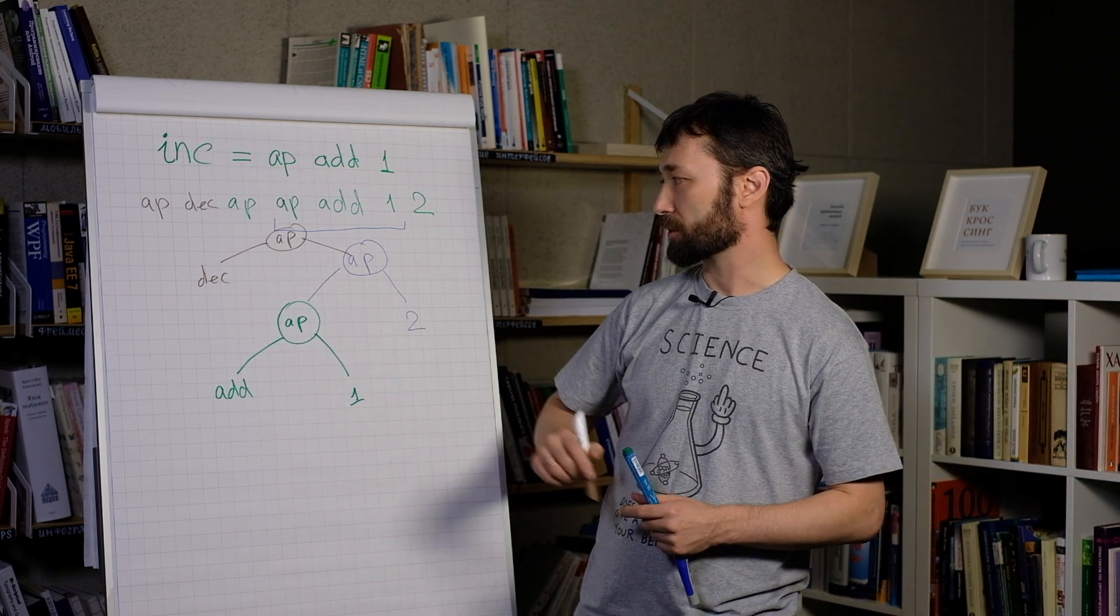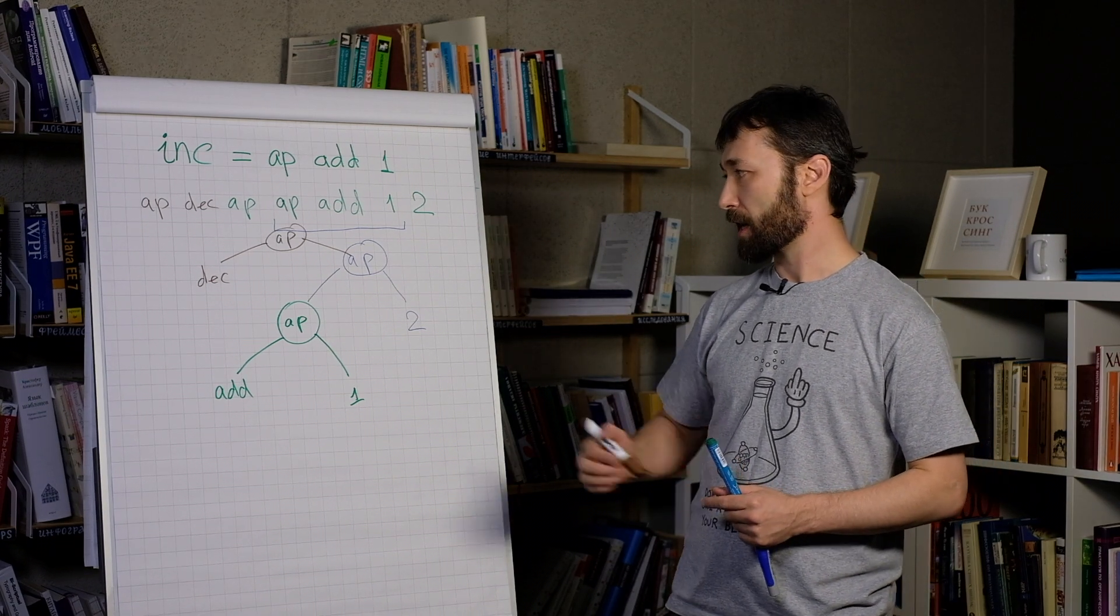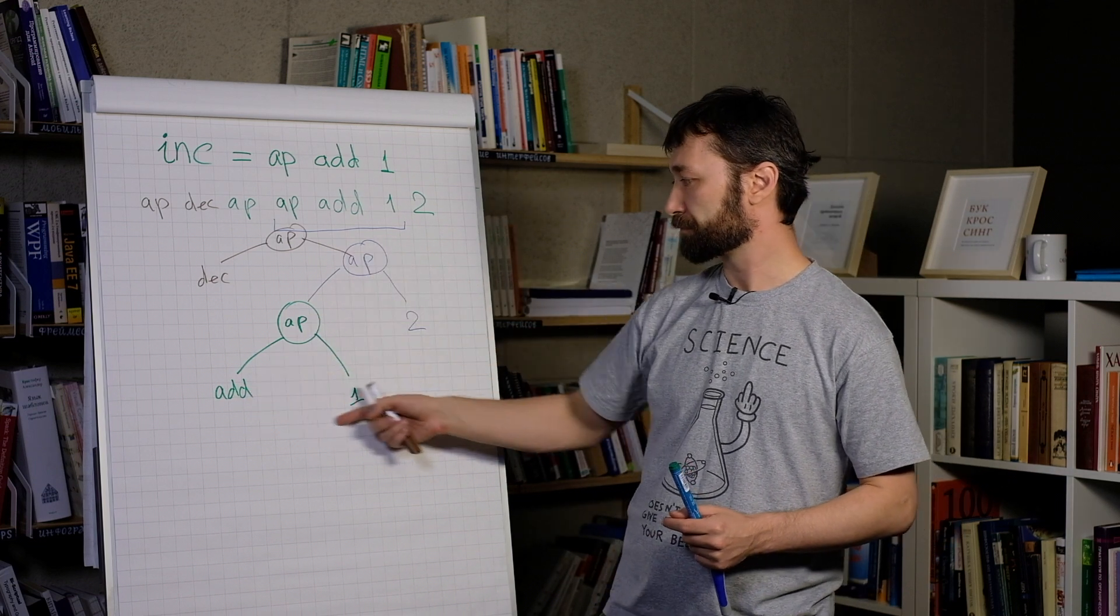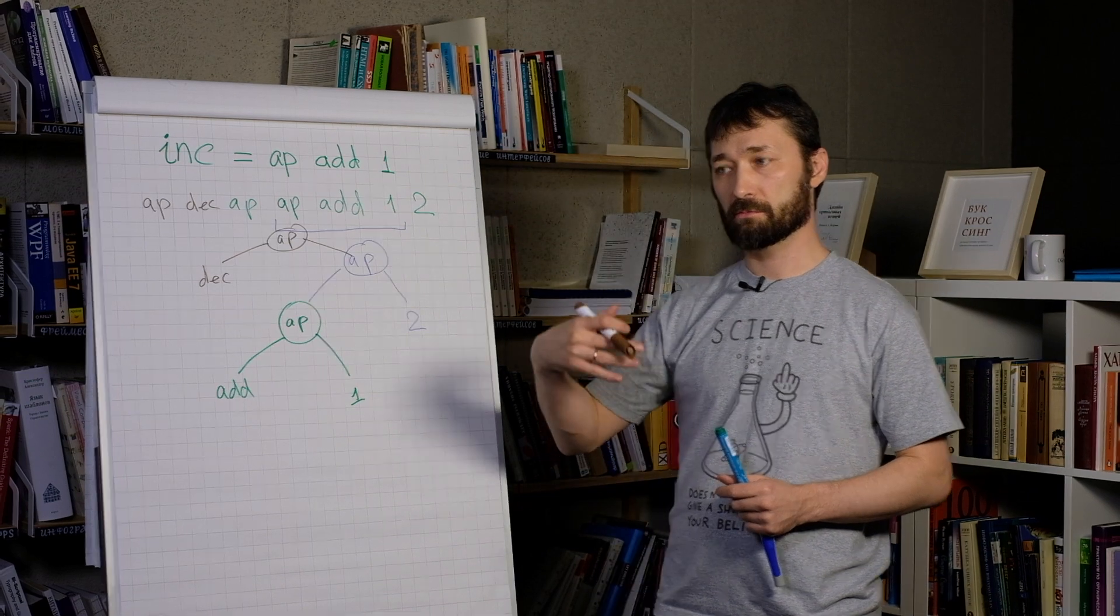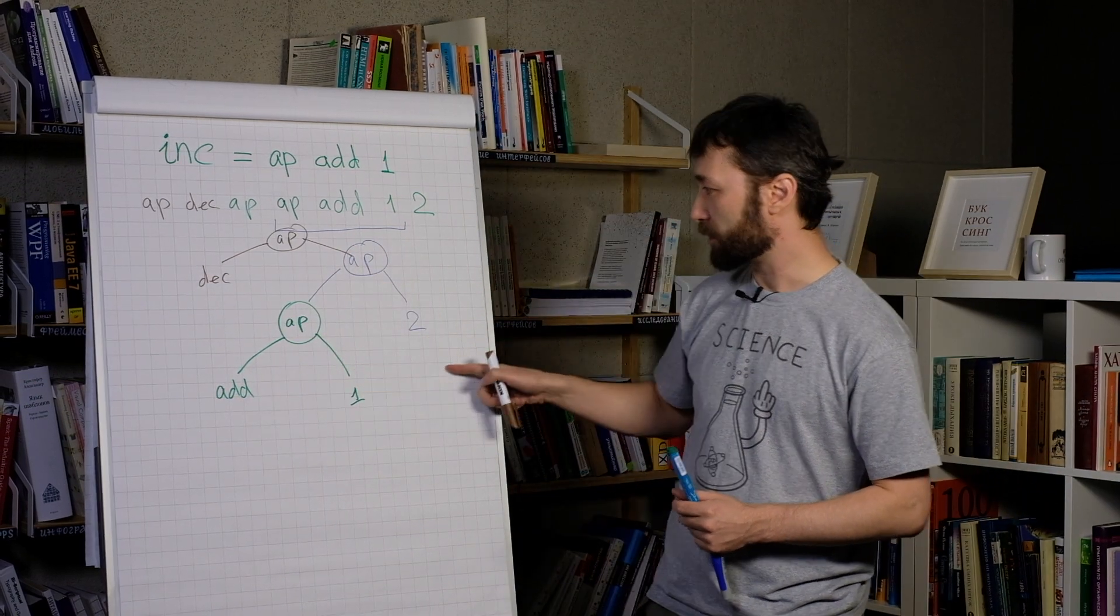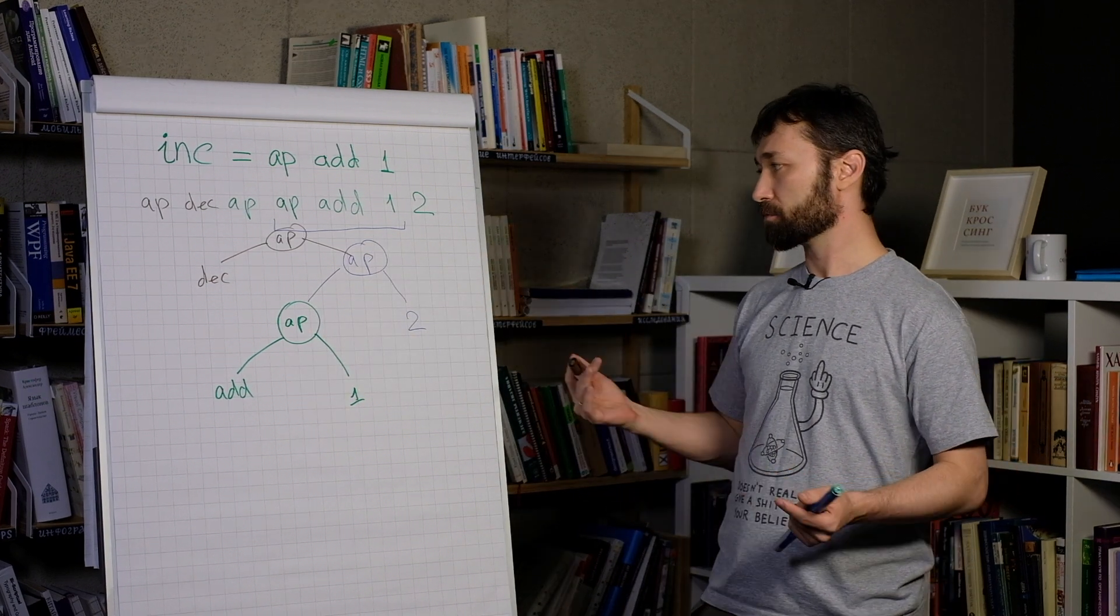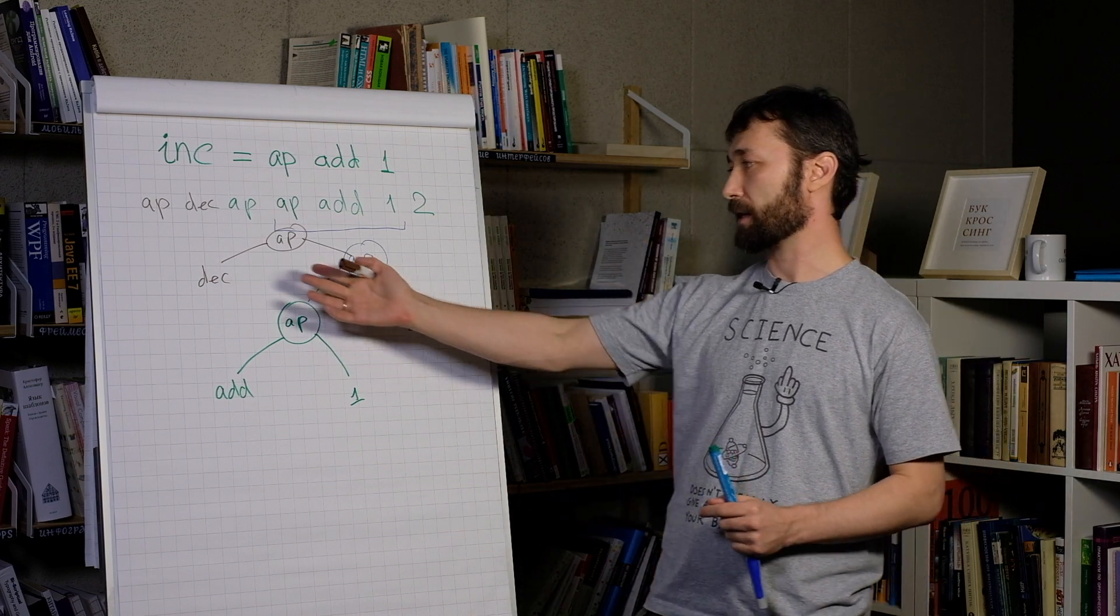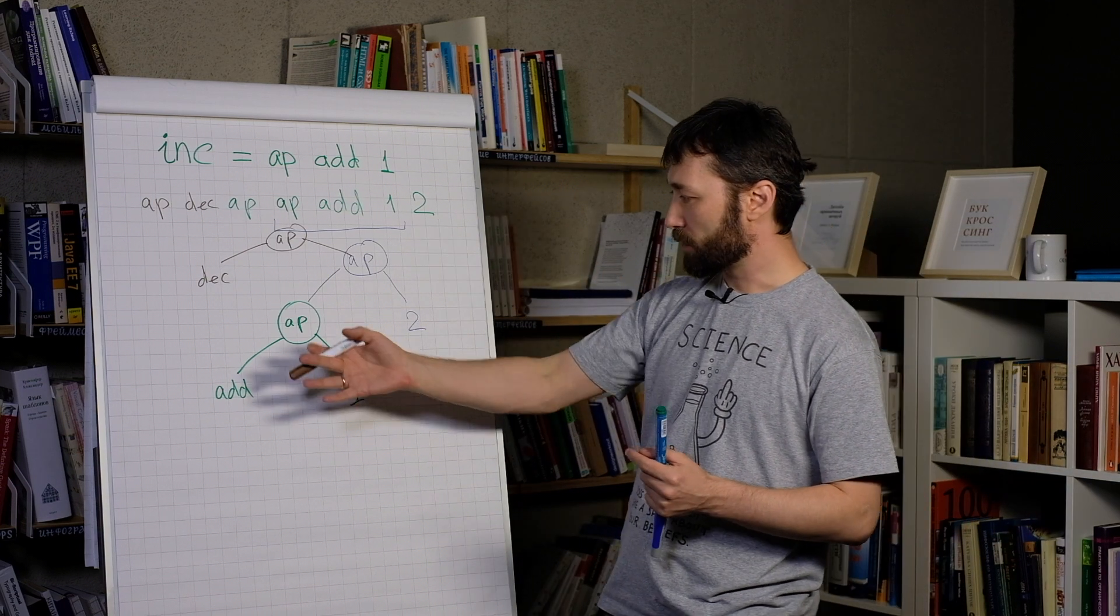Okay. We have a dec function. It is defined as a function of a single argument. And it already has one argument. But dec is defined only on numbers. And its argument is not a number yet. It's a subtree. So we can't apply dec. We can't do anything with dec. So let's find another thing we can do with this tree.